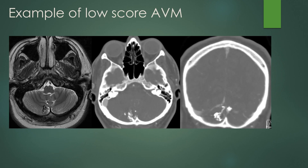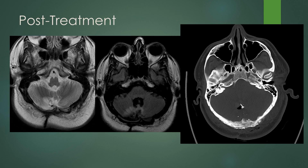This is an example of a low-score AVM. Here is the nidus in a cerebellar hemisphere. It measures less than 3 centimeters in maximum diameter and is draining into a cortical vein before reaching the torcular. This would be an AVM that could potentially be operated upon, and in this case it was. You can see the craniotomy defect in the occipital bone, some encephalomalacia in the right cerebellar hemisphere and vermis, the clip used for the arterial supply, and a little post-surgical air from the craniotomy site.